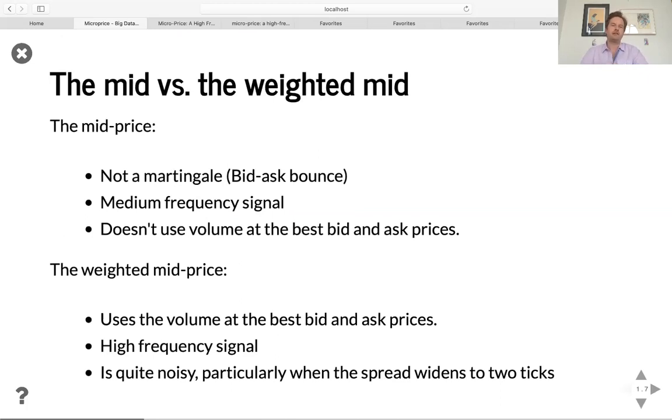The mid price is not martingale. And this is a fact that's documented and it's known as the bid ask bounce. When the mid price moves up a tick, it's much more likely to move down a tick on the second move. And as we can see in the previous slide, it's a medium term signal and it doesn't use the volume at the best bid and the best asks. The weighted mid on the other hand uses these volumes, is a higher frequency signal, but it's sometimes considered to be quite noisy, especially when the spread widens to two ticks.